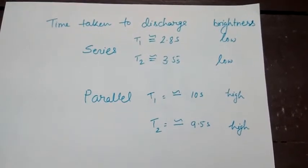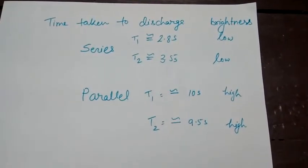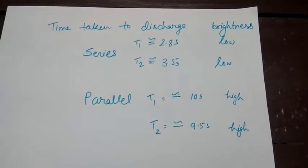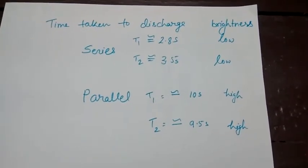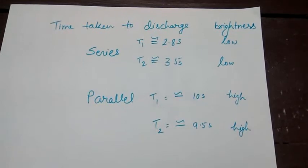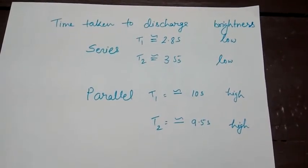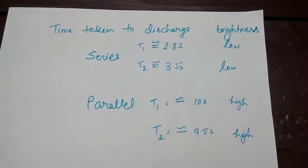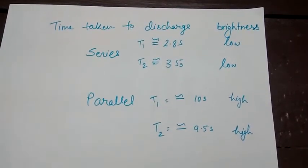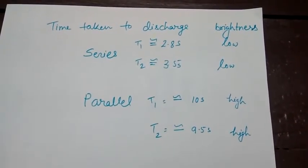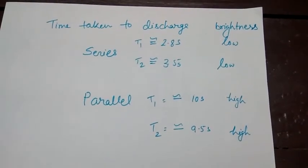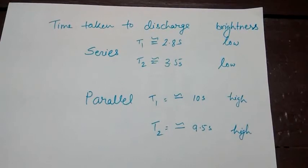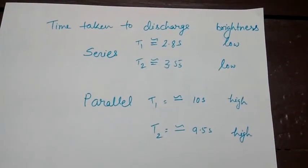Here I have recorded the values for the discharging time of capacitors. These are approximate values, but we can clearly observe that when we connect capacitors in series, the total capacitance decreases and the discharge time also decreases. Whereas in parallel, the total capacitance increases and the discharge time also increases. Thank you.